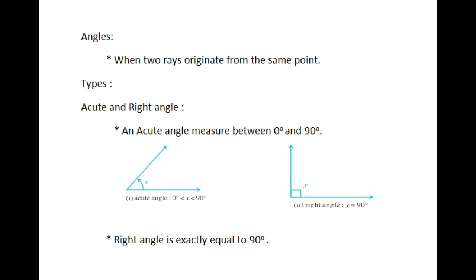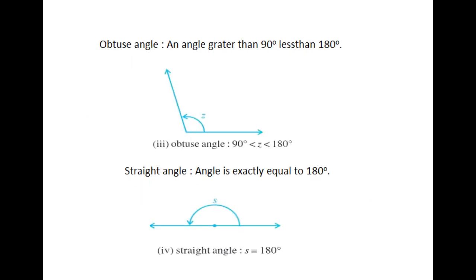Now I am going to show you types of angle. See the acute angle in figure. An acute angle measures between 0 and 90 degrees. Next, right angle: a right angle is exactly equal to 90 degrees. Obtuse angle: an angle greater than 90 degrees but less than 180 degrees is called an obtuse angle.